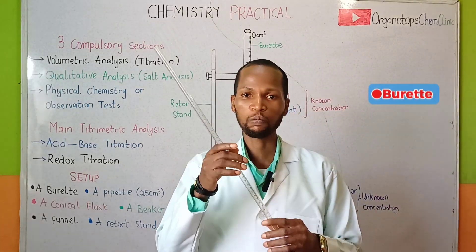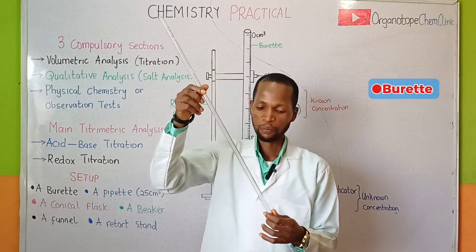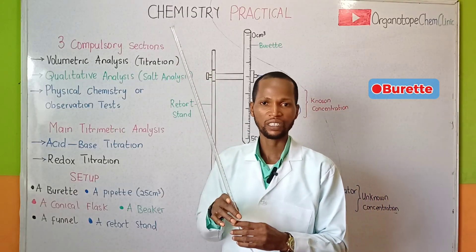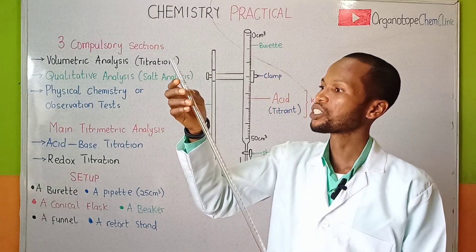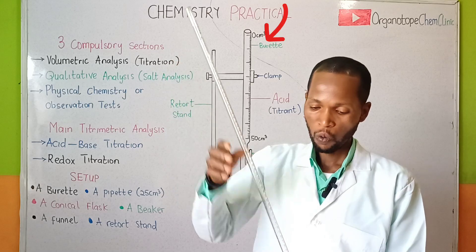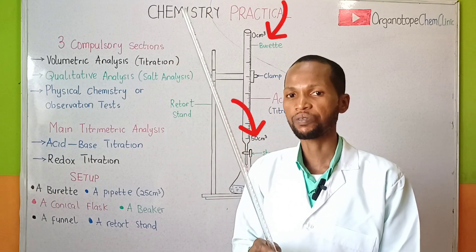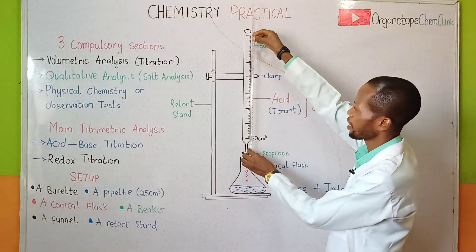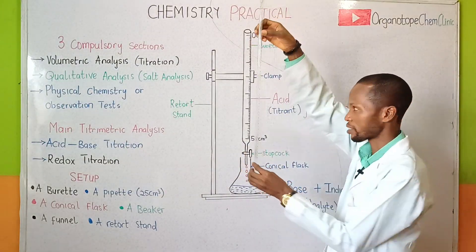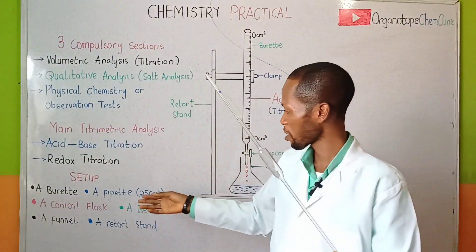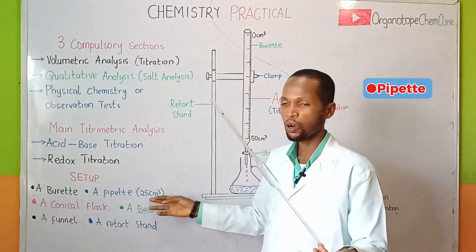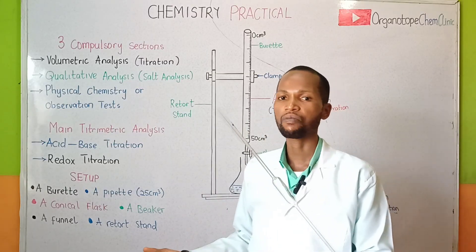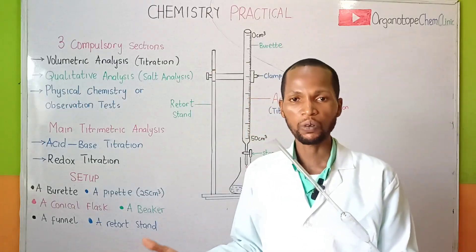Here is a burette. The burette is calibrated from 0 to 50 cm³. The upper calibration is 0 while the lower calibration is 50 cm³, as shown on the diagram on the board. We also need a pipette — in most cases we have the 25 cm³ pipette, and we also have the 20 cm³ pipette.